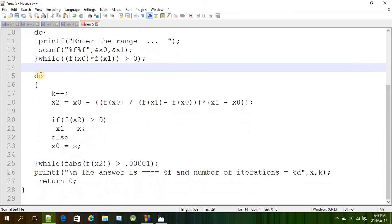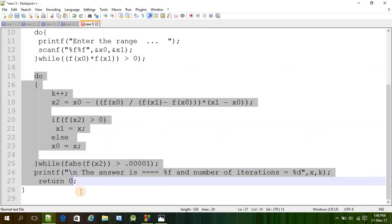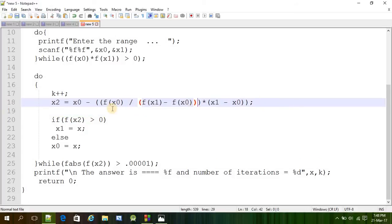After getting that interval then we have to find out the x2 as per the algorithm and here we are calculating the x2, same formula again. And after getting the value of x2, if f of x2 is greater than 0 then we are going to change x1 otherwise x0.